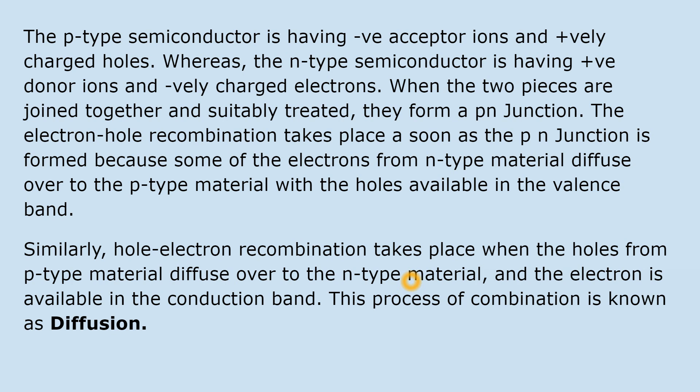When the two pieces are joined together and suitably treated, they form a P-N junction. When a P-N junction is formed, the P side has holes and negative ions and the N side has electrons and positive ions. Electron-hole recombination takes place as soon as the P-N junction is formed — जैसे ही P-N junction form होगा, electron और hole का recombination शुरू होगा। Because some of the electrons from the N-type material diffuse over to the P-type material and combine with holes there. Similarly, hole-electron recombination takes place when holes from the P-type material diffuse over to the N-type material. This process is known as diffusion.